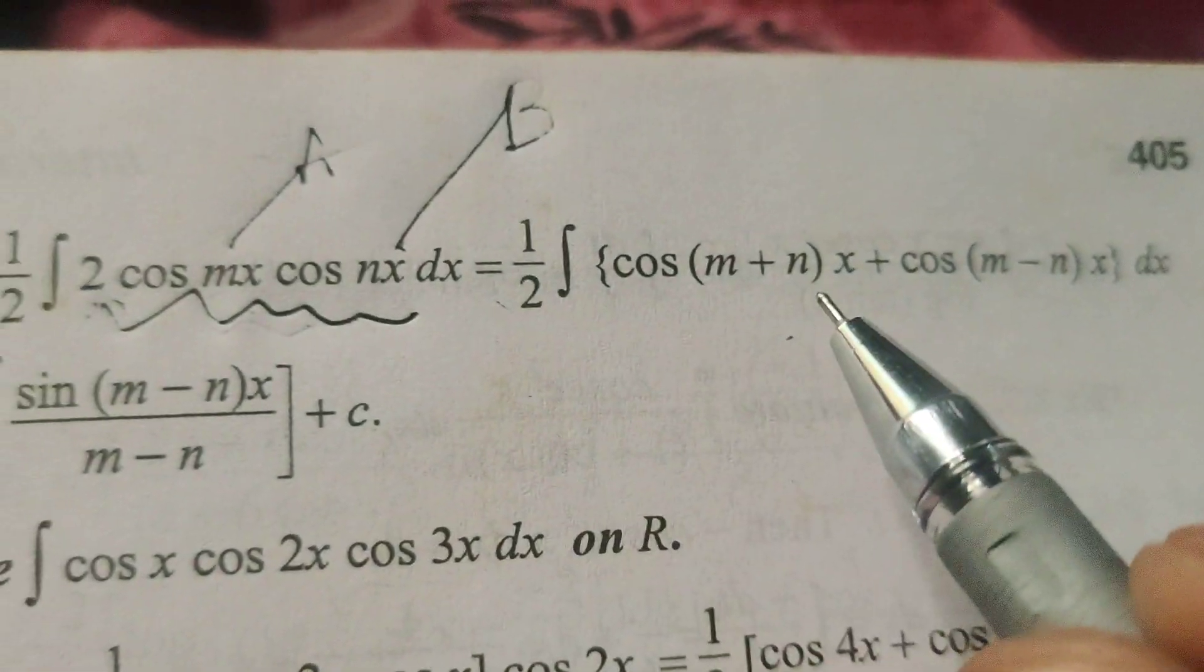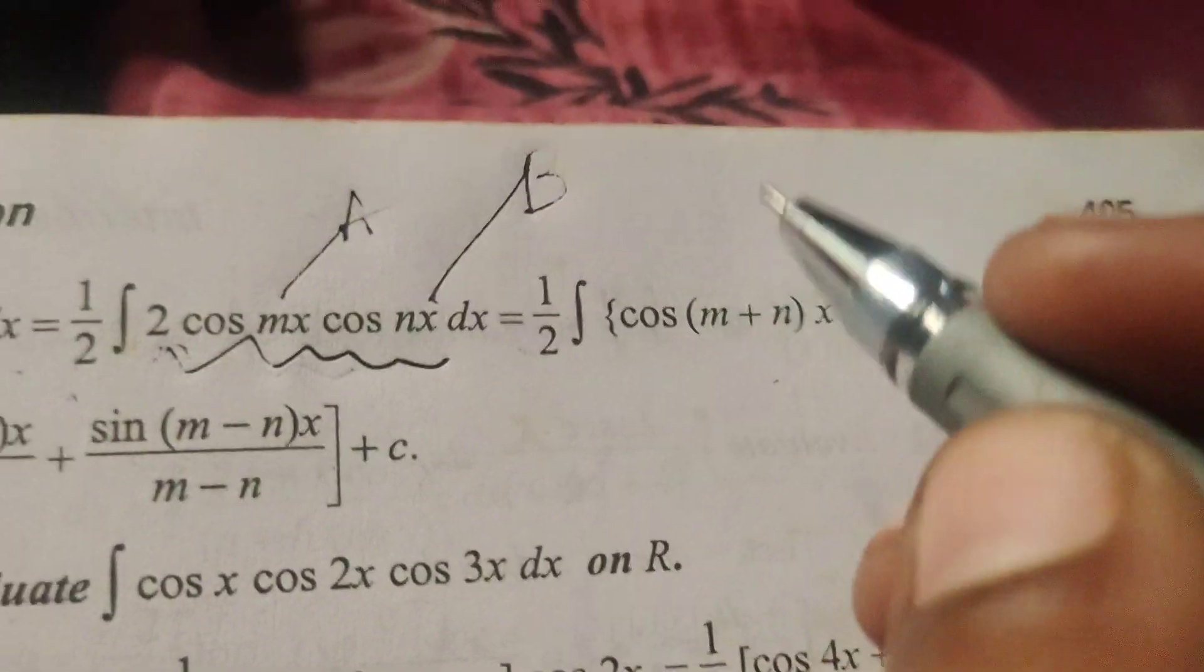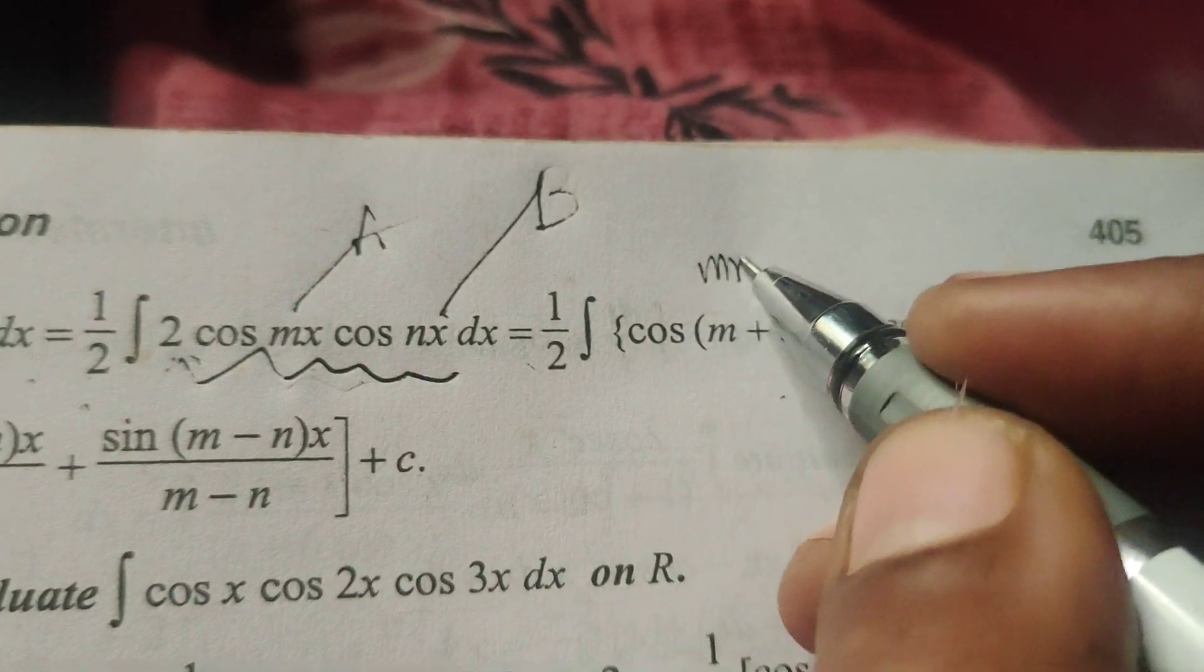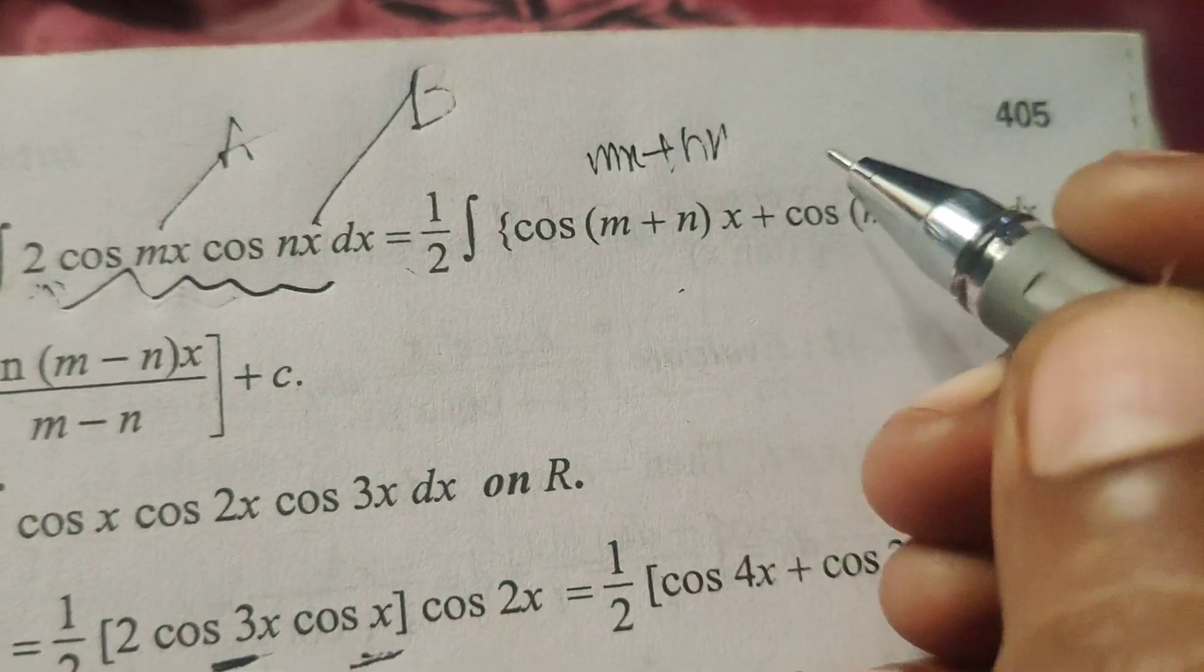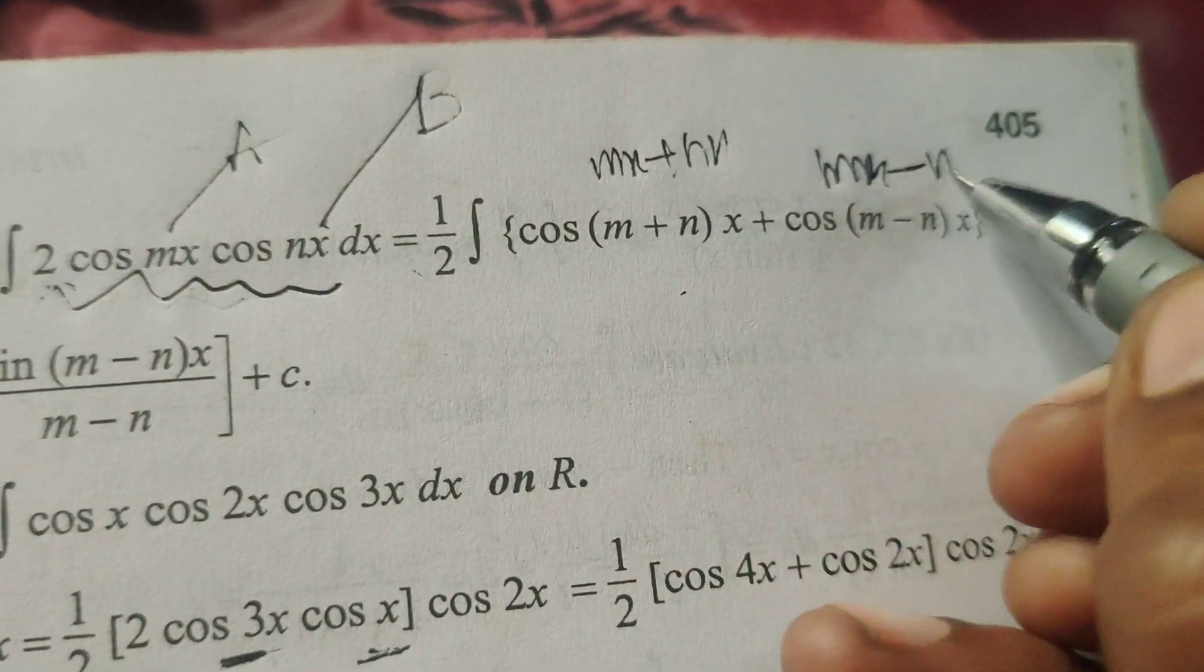Therefore cos of a plus b is mx plus nx. Now here x is the common factor. Here mx minus nx, right?